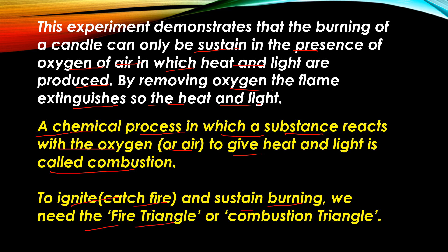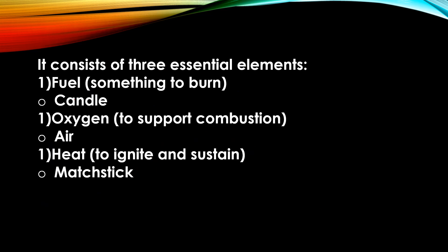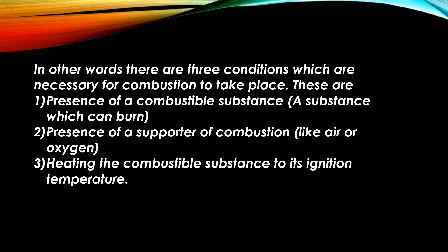The fire triangle or combustion triangle consists of three essential elements: first, fuel — something to burn, for example a candle; second, oxygen — to support combustion, which we get from the air; and third, heat — to ignite and sustain, which we got from the matchstick in our example.